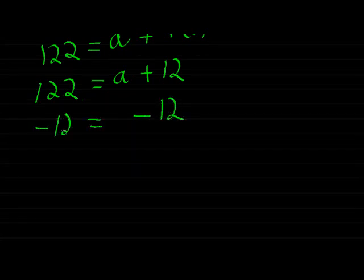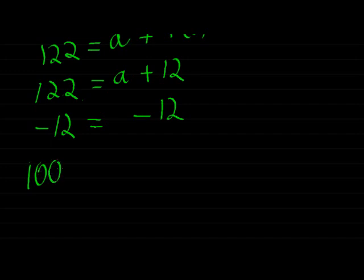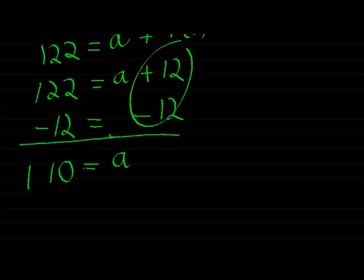And if I therefore get rid of the 12, I need to subtract it on this side. So minus 12, but what I do on one side, I do on the other side. So that I get 110 equal to a. This part would be zero again. And here we go.